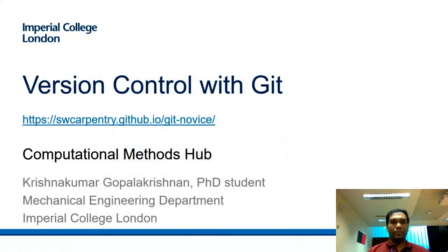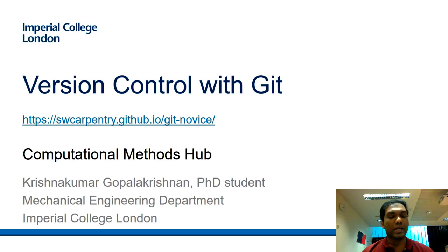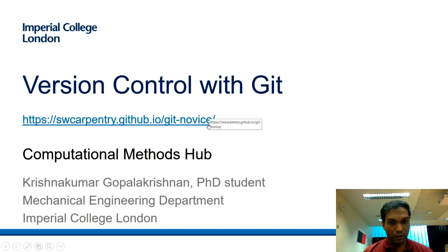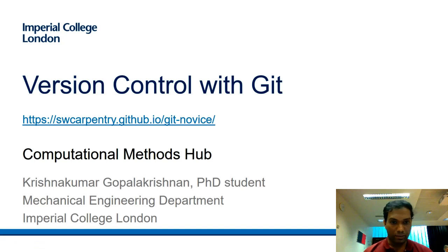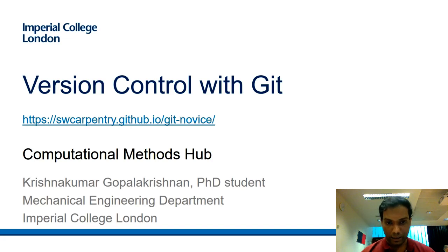Welcome everybody. This is the course on using git for version control. The course materials are based on the materials written at the Software Carpentry website, and I have given the link to this website. So our course materials will be based on the materials available over there. I'm going to also show the link in the browser in a minute.